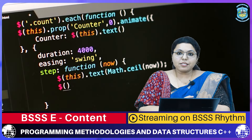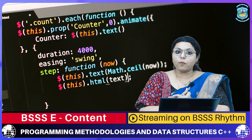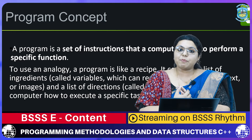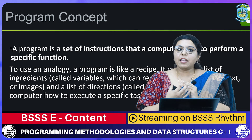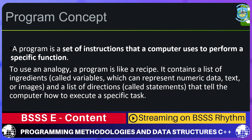Program concept — what is a program? A program is a set of codes or set of logics where we write code and get the result of our objective. A program is a set of instructions that a computer uses to perform a specific function. For example, when cooking a dish we use spices as ingredients and follow certain steps. Similarly, our spices are our variables — representing numeric data, text, or images — and the directions for using those variables are the statements of our programming language.